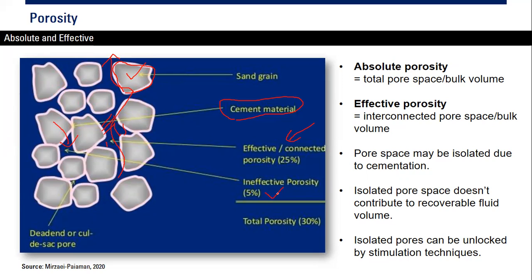A typical value: effective porosity is usually bigger than ineffective porosity. In this case, effective porosity is 25% and ineffective porosity is 5%, so total porosity is 25 plus 5, which is 30%. You can also see here what we call a dead-end or cul-de-sac pore.